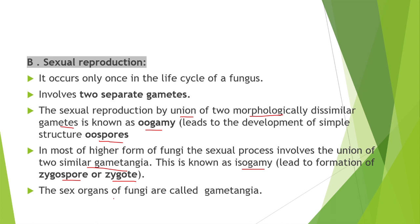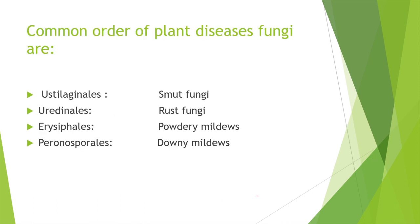The common orders of plant disease fungi: first is Ustilaginales, which includes smut fungi; second is Uredinales, which includes rust fungi; third is Erysiphales, which includes powdery mildew; and fourth is Peronosporales, which includes downy mildew.